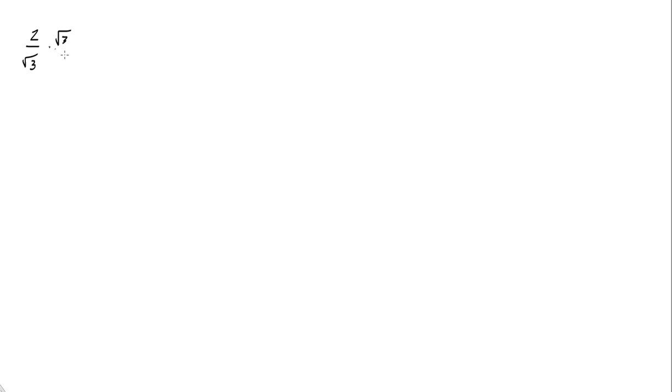Remember when we had a problem like 2 over the square root of 3? You multiplied by the square root of 3 over the square root of 3 — we rationalized the denominator. We made it into a rational number instead of an irrational number. 2 times radical 3 was 2 radical 3, and radical 3 times radical 3 is 3.